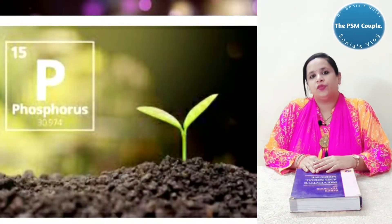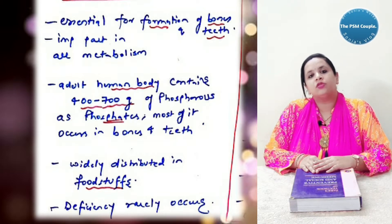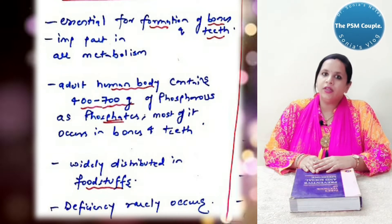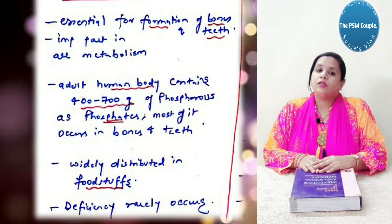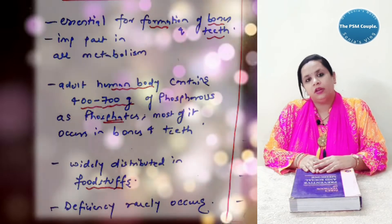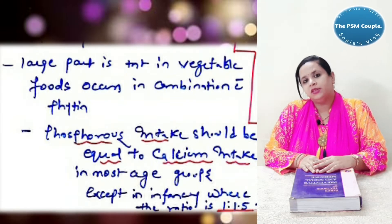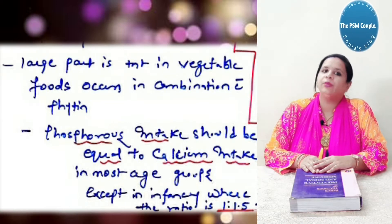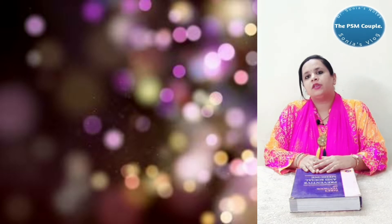Coming to the next mineral, phosphorus: it is essential for the formation of bones and teeth and is an important part in all metabolism. The adult human body contains 400 to 700 grams of phosphorus as phosphates. Most of it occurs in the bones and teeth. It is widely distributed in foodstuffs and deficiency rarely occurs. A large part is present in vegetable foods in combination with phytins. Phosphorus intake should be equal to calcium intake in most age groups, except in infancy where the ratio is 1 to 1.5.